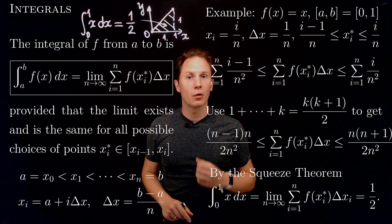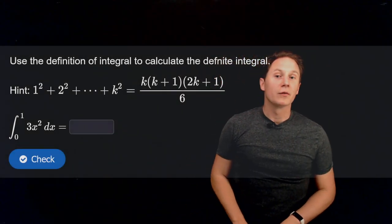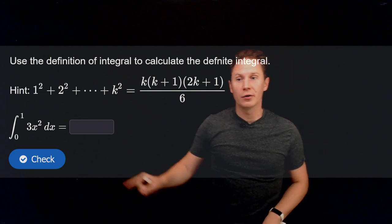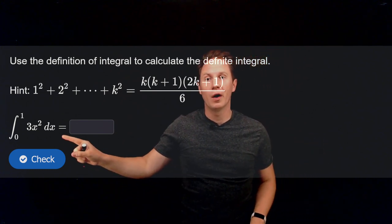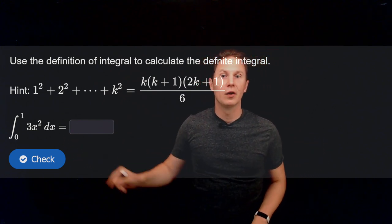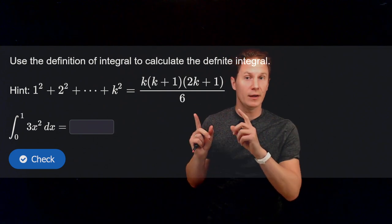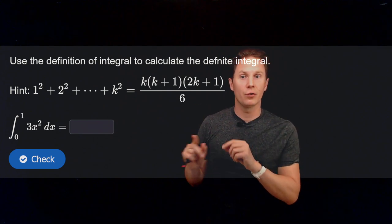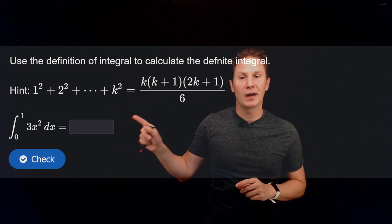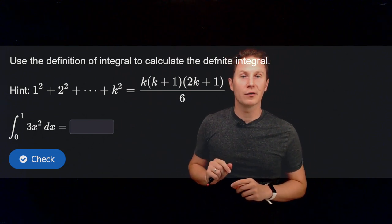Now let's solve another problem. Use the definition of the integral to calculate the definite integral from 0 to 1 of 3x² dx. Pause the video and use the definition you just saw, along with this formula, to obtain the value for the definite integral.